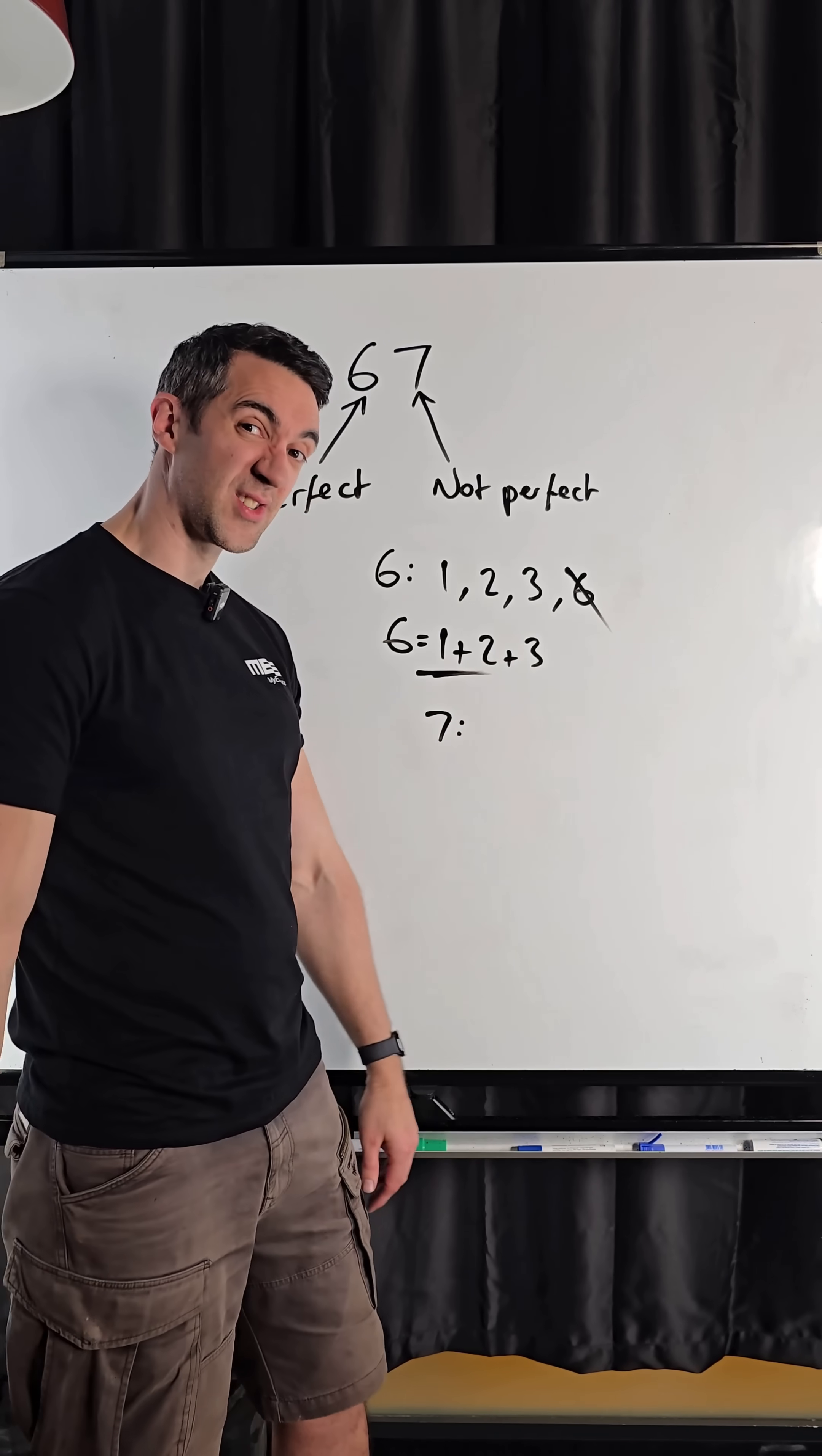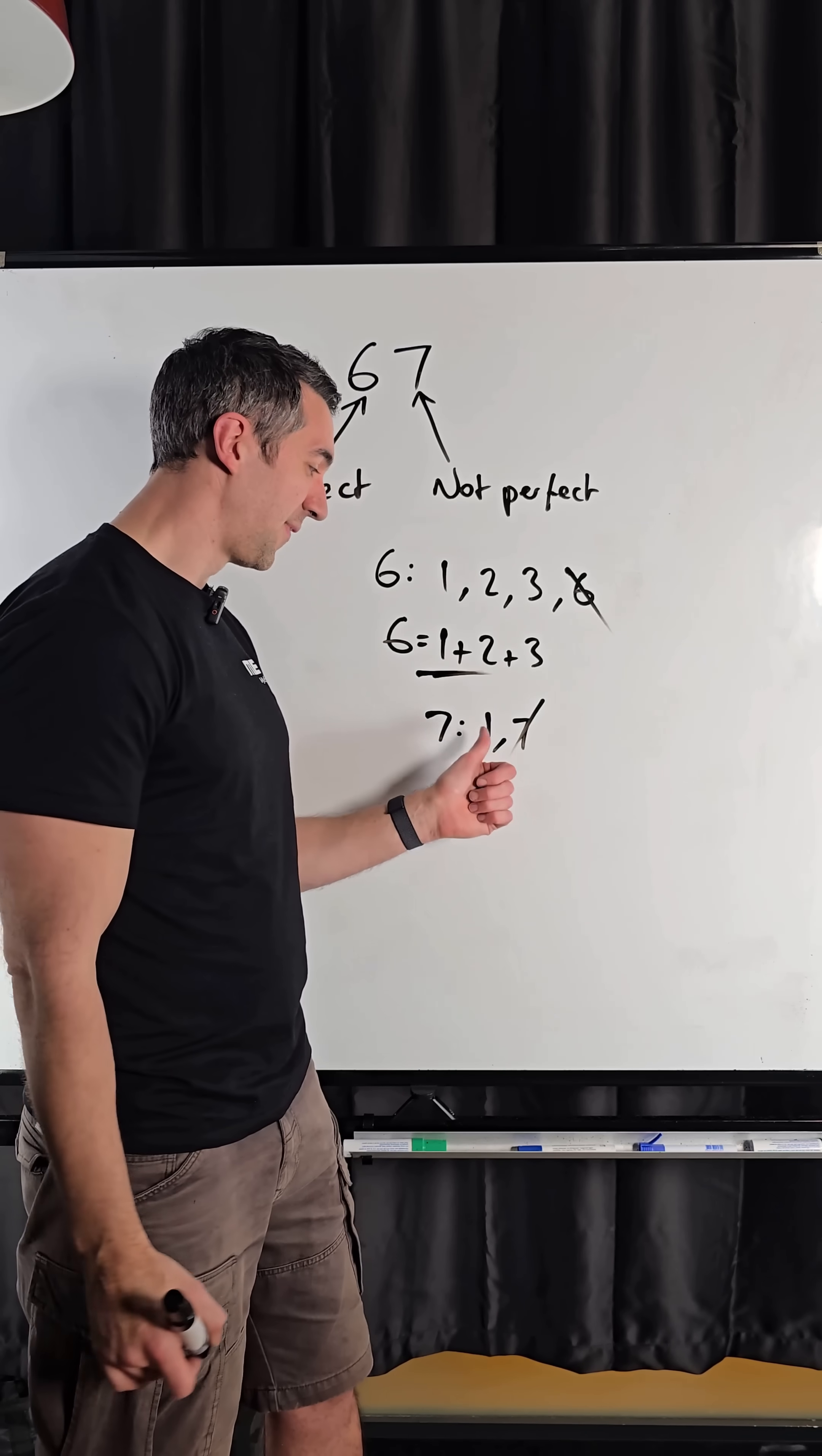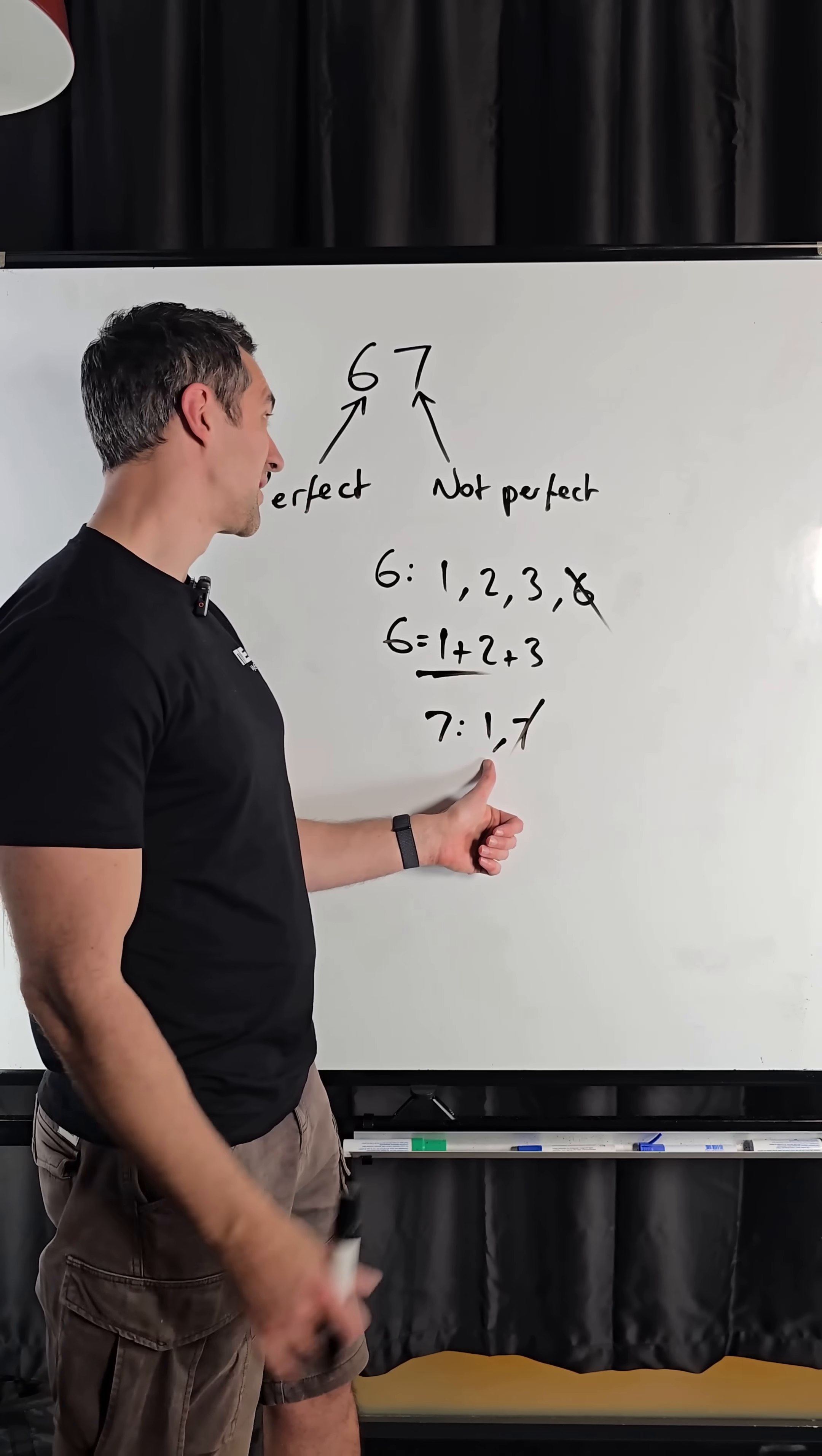Seven only has two factors, because it's a prime number. When I take one and seven, get rid of the number itself, I definitely do not get seven. So that is why seven is not perfect, but six is.